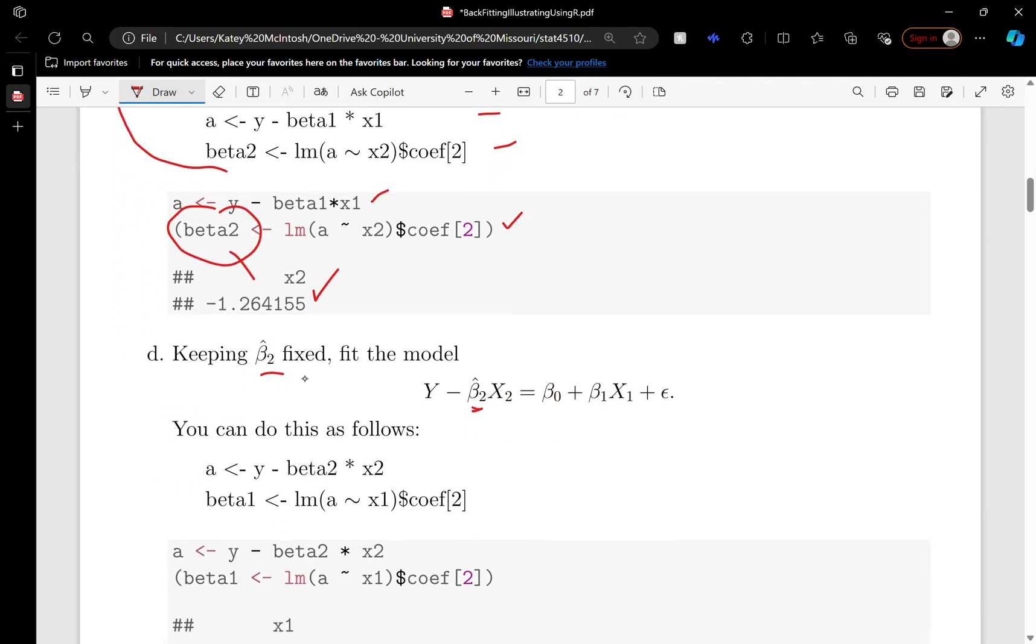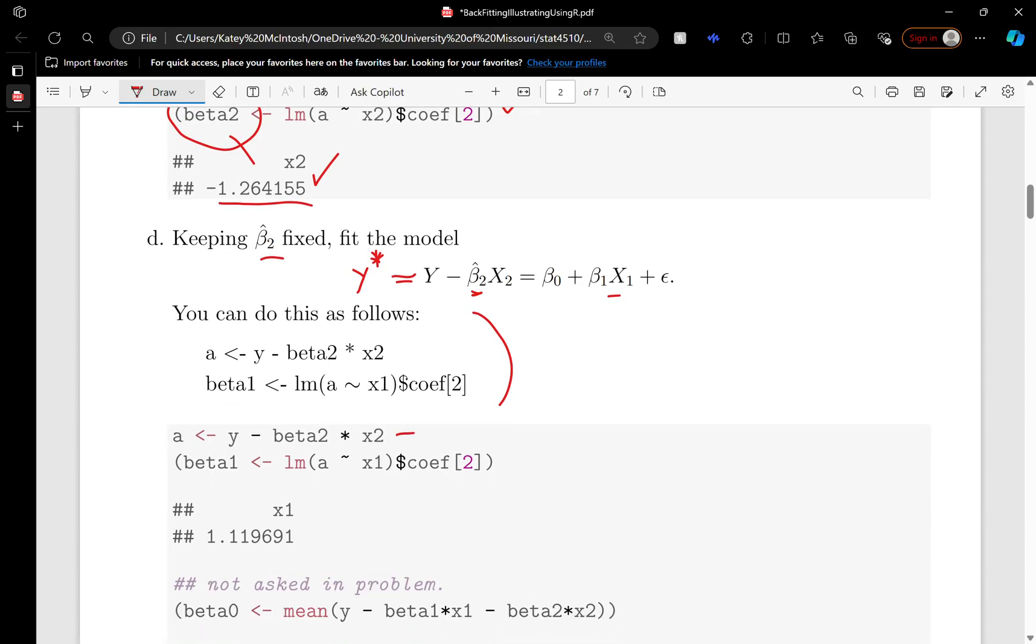Now we fix beta 2 at this value, subtract it over—this is our new Y—and then we run linear regression to estimate beta 1. The book suggests using this code. This piece here is the left side, the dependent variable, and we regress it onto X1. Since it's a linear regression, there are two coefficients, and we want the second one, the slope parameter. That's our new estimate for beta 1.